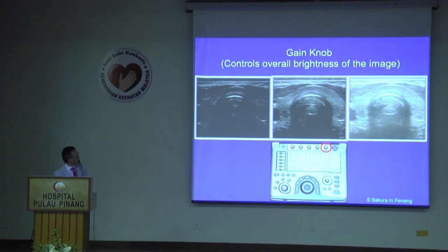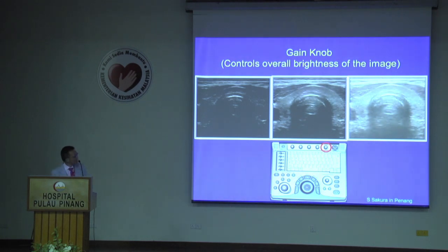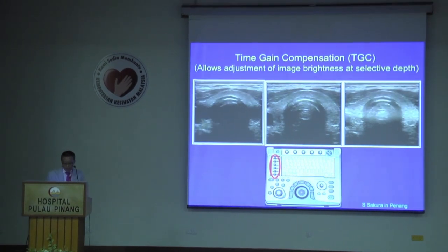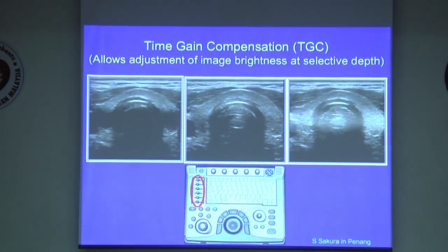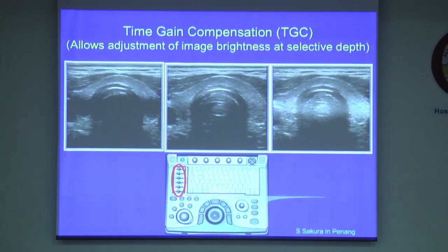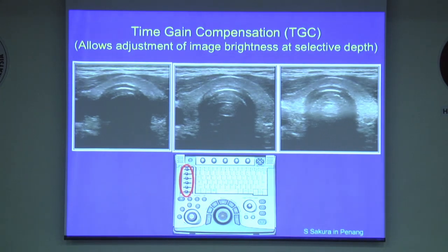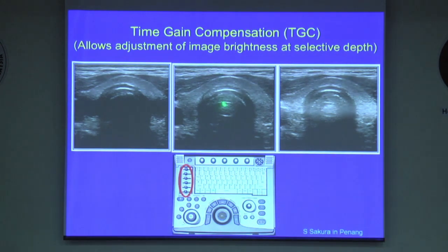Probably the gain knob is most likely the knob you use most frequently. This adjusts the overall brightness of the ultrasound image, and inadequate or excessive gain can cause blurring of tissue boundaries as well as loss of information. Most machines have five to ten slide controls grouped together — these are TGC, or time gain compression controls. They adjust gain in specific areas of the image. The middle image showed an optimal TGC setting while the others are incorrect settings.